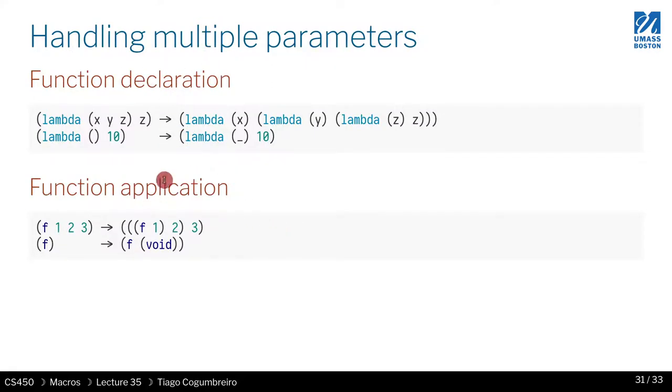Then there's another thing I will ask you to write: handling multiple parameters with these following two examples. In function declarations, you will have something like X, Y, Z, and it needs to be transformed into a lambda with X that inside has another lambda with Y inside of that has another lambda with Z. And when you have this, there's a special case when there are zero parameters, which you should create a lambda that takes just a single parameter that is underscore.